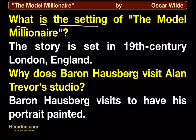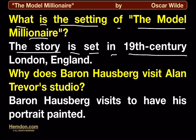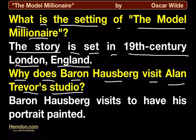What is the setting of The Model Millionaire? The story is set in 19th century London, England. Why does Baron Hausberg visit Alan Trevor's studio? Baron Hausberg visits to have his portrait painted.